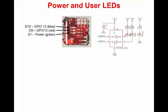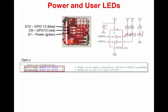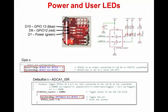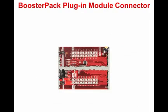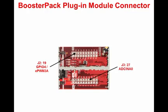The demonstration will use LED D9 as a visual indicator to show the ADC ISR is running. In the GPIO.C file, GPIO12 is set as an output and initially turned off. In the default ISR.C file, GPIO12 will be toggled at a rate of 1 Hz so that the slowly blinking LED D9 can be seen. The LaunchPad includes a series of booster pack plug-in module connectors following the TI booster pack pinout standard. During this demonstration, we will use a jumper wire to connect the output of EPWM3A on header J2 pin 19 to the input of ADC in A0 on header J3 pin 27.